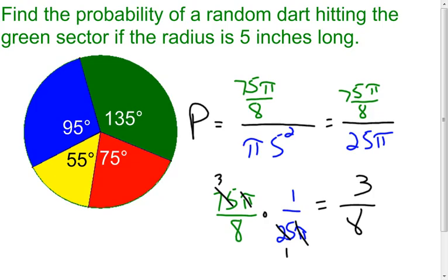3 times 1 in the numerator, 8 times 1 in the denominator. The probability of my random dart hitting the green section, or green sector, is going to be 3/8. So, that's one way to calculate the area of that sector.